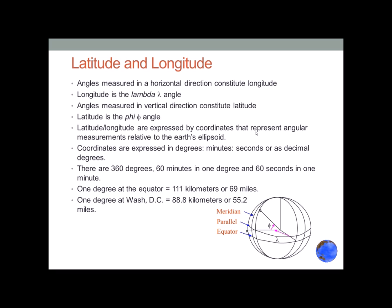How do we figure latitude and longitude? For longitude, imagine an axis running from pole to pole and two lines swiveled on that axis — one extends to the prime meridian, the other extends to whatever point you want to measure. The angle between those two extensions is longitude. Moving east of the prime meridian is positive; moving west is negative until you reach 180 degrees, the opposite side of the prime meridian.